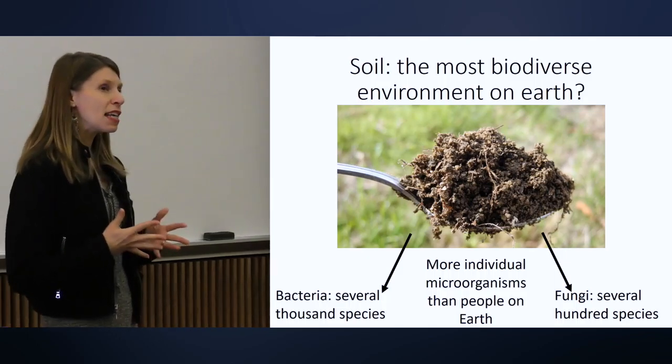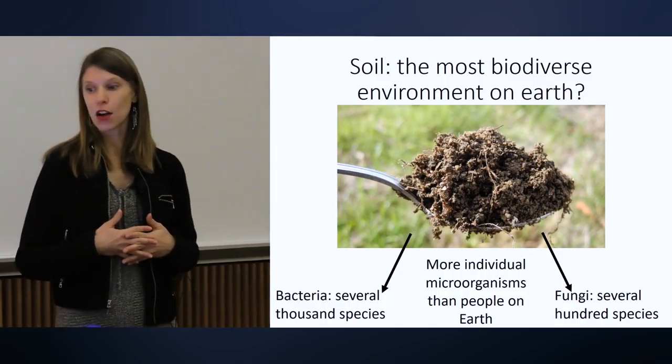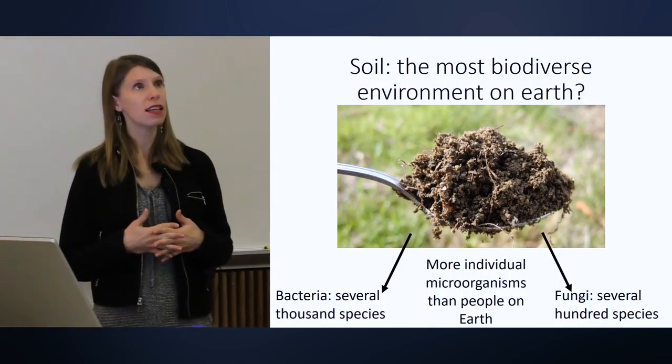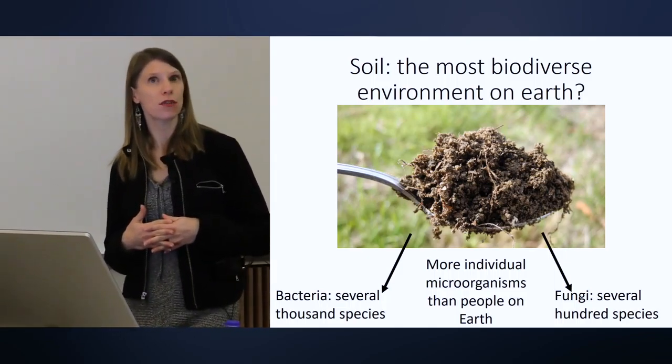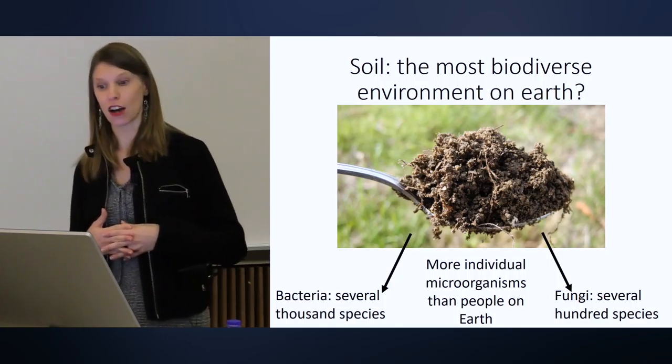The number of microbes in our guts is small potatoes compared to the number that live in dirt and recycle nutrients there. If you go into your back garden in the summer and scoop up one teaspoon full of dirt, that spoonful is going to have more microorganisms in it than there are people on this planet — just a little teaspoon. In there, you're going to find a couple hundred species of fungi and probably a couple thousand species of bacteria, all working together to recycle nutrients through the soil. Many scientists, myself included, would contend that soil is actually the most diverse environment on Earth.